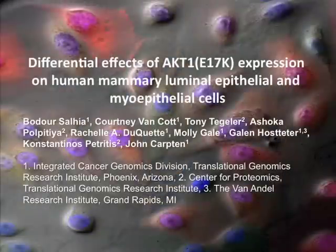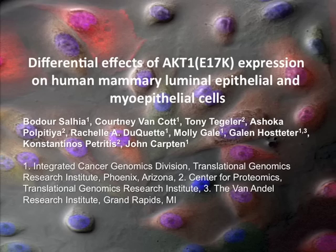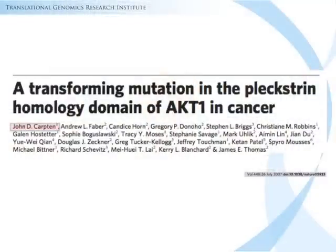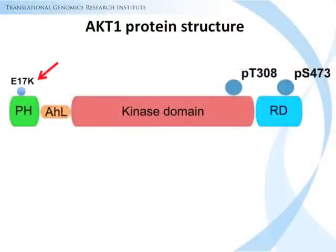It is entitled Differential Effects of AKT1 E17K Expression on Human Mammary Luminal Epithelial and Myoepithelial Cells. This work began as a result of the discovery made by the current paper's senior author, Dr. John Carpton and colleagues, identifying the very first mutation in the AKT1 gene. The work was published in the journal Nature in 2007.